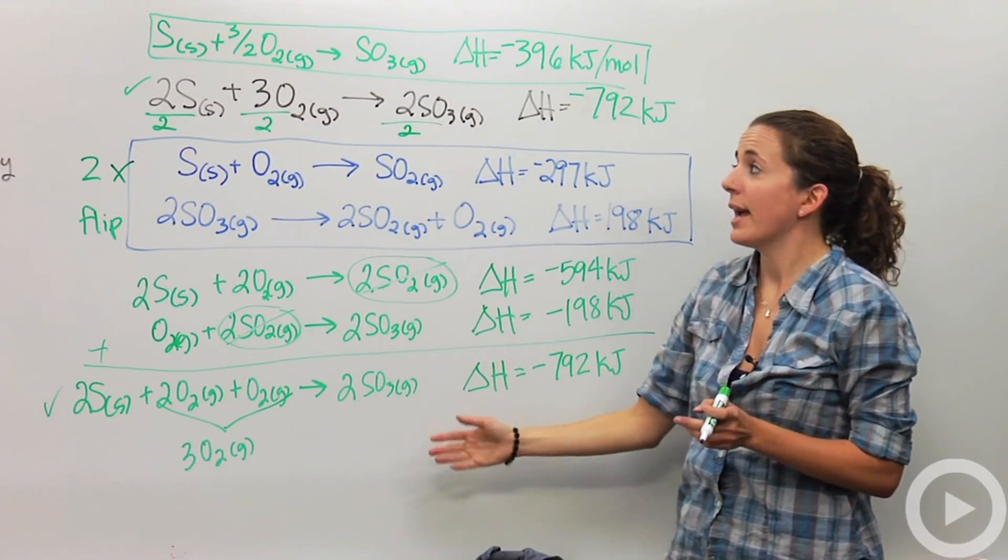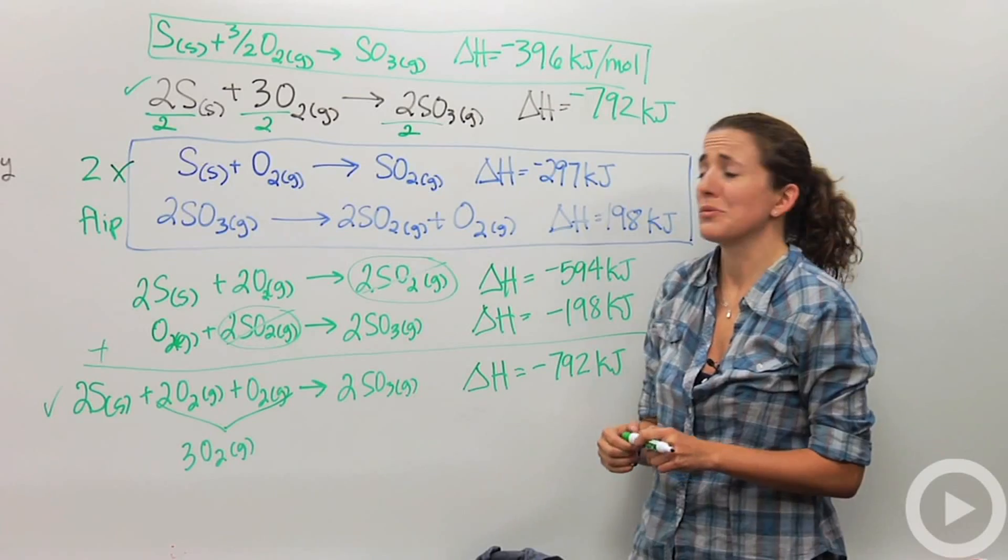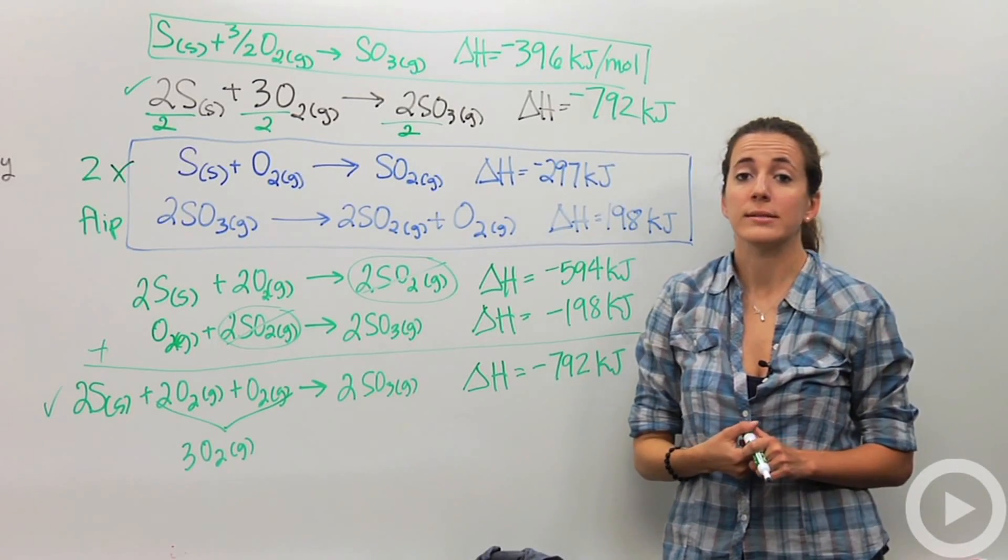So this is Hess's law in action, and then we put a little bit of delta H of formation in there as well. So Hess's law is really useful when dealing with reactions where you do not know our delta H's, and we need to find it pretty easily.